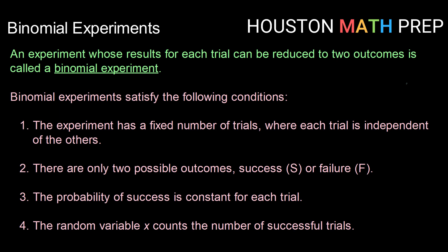There need to be only two possible outcomes, success or failure. The probability of success needs to be constant for each trial and the random variable X should count the number of successful trials.